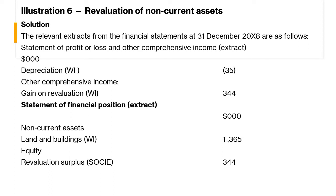Now see the solution. The relevant extract from the financial statements at 31st December 2018 is as follows. In the statement of profit and loss and other comprehensive income: depreciation is 35,000, calculated as 1,400,000 divided by 40 equals 35,000. Under other comprehensive income, the revaluation gain is 344,000.